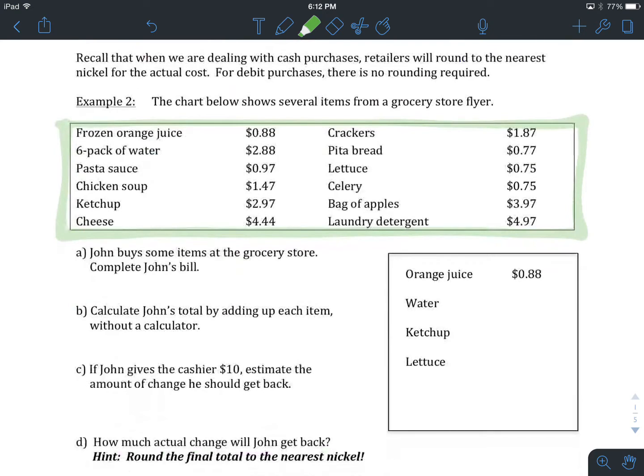Example number two. John buys some items at the grocery store. We're going to complete John's bill. John's bill is over here, partly finished. We've got orange juice set in at $0.88, and we're going to fill in the rest. So we are going to look through, and we're going to fill these items in. I'd like you to go ahead and do that now, so hit pause. When you're done filling in John's grocery list, come on back.